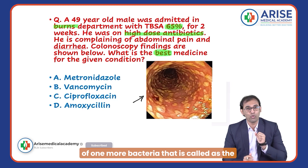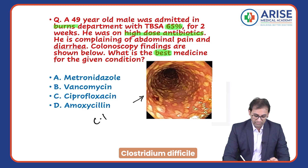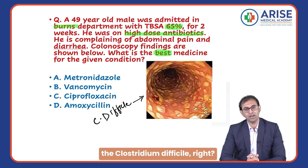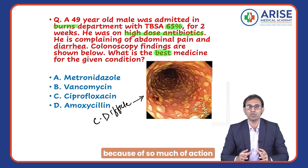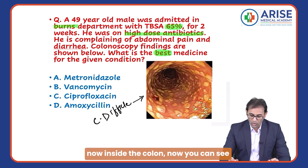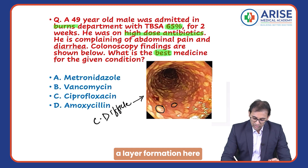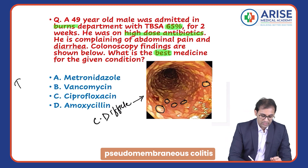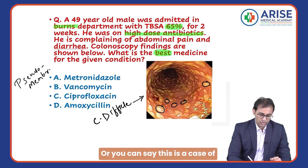After killing the healthy GI flora, there will be more and more action of one bacteria called Clostridium difficile. Because of so much action of Clostridium difficile, now inside the colon you can see a layer formation — a pseudomembrane. This is called pseudomembranous colitis.